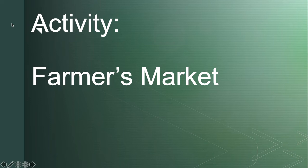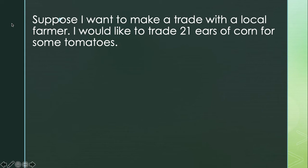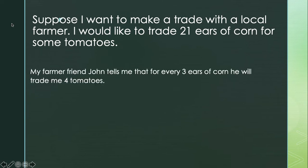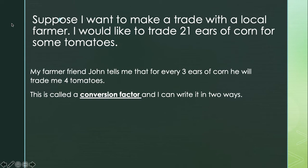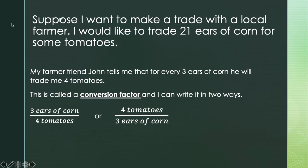For example, if I want to change yards into inches. Suppose I want to make a trade with a local farmer — I would like to trade 21 ears of corn for some tomatoes. My farmer friend John tells me that for every three ears of corn he will trade me four tomatoes. This is called a conversion factor, and I can write it in two ways: three ears of corn is to four tomatoes, or four tomatoes is to three ears of corn. Either way, we're showing an equivalence between three ears of corn and four tomatoes.